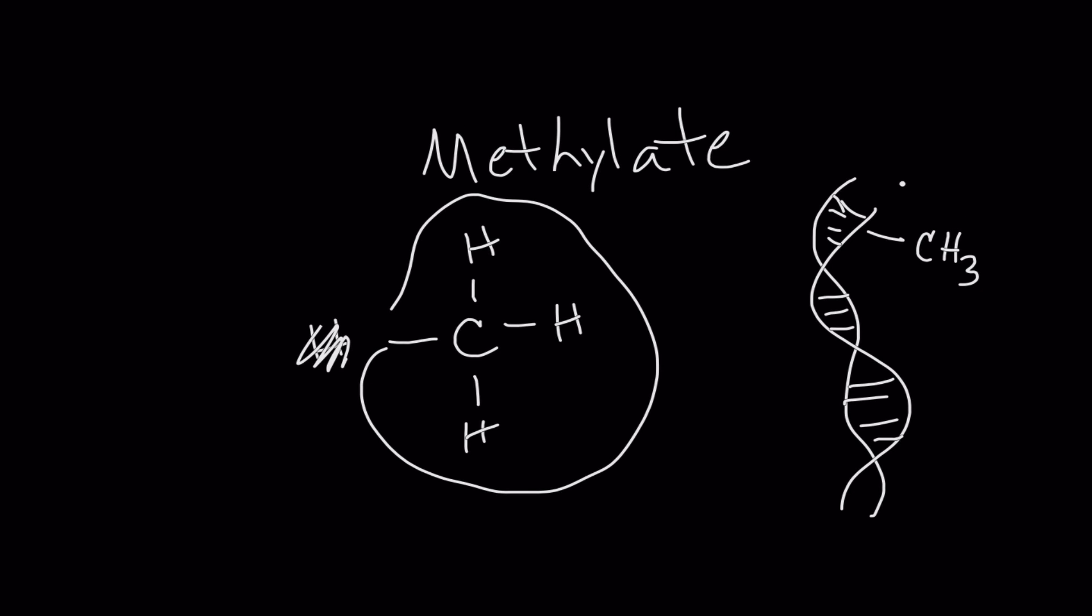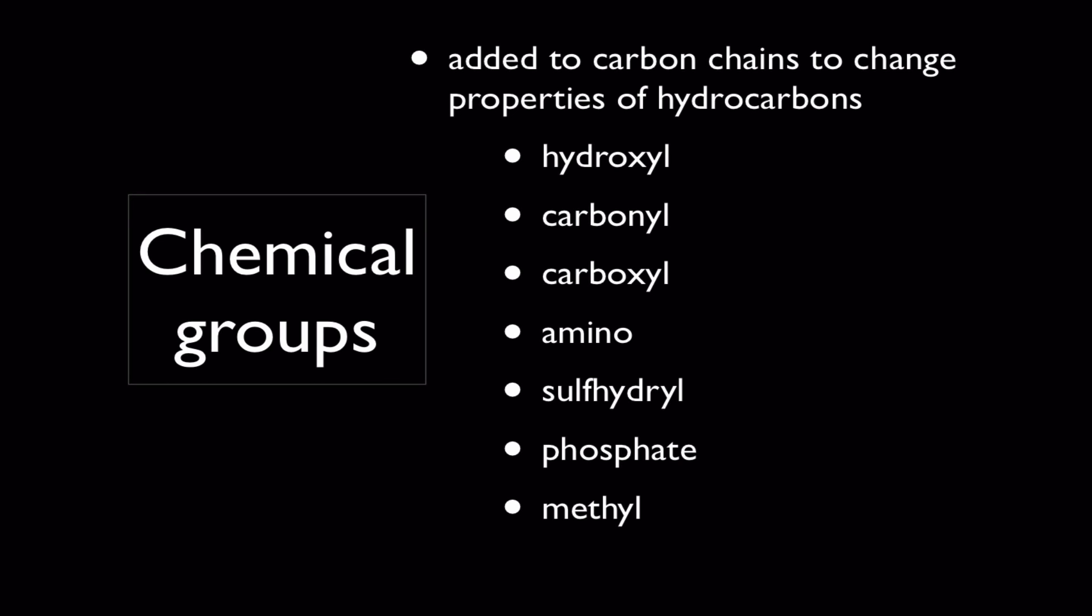So all together, you should know something about all of these chemical groups. And just a quick review here: hydroxyl groups produce alcohols, carbonyl groups can produce things like acetone, carboxyl groups produce acids, amino groups associated with amino acids.